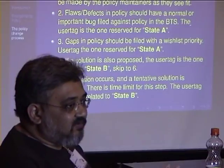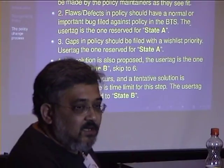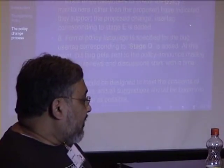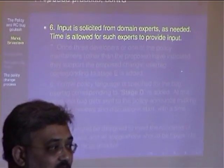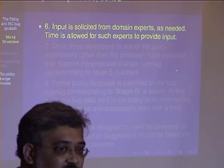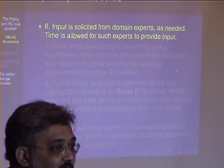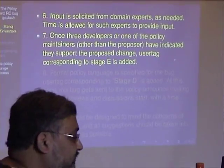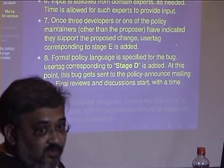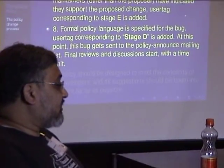Then the discussion occurs — tentative solutions and alternate solutions are proposed. I want a strict time limit for this stage. If we can't find a solution in a month, we might not find one. We solicit input from domain experts, but they might not want to respond. So again there is a time limit: you ask them, you wait politely for a response for a week or so, and if nobody responds, we kind of move on — we don't let the proposal die there. I want sign-off so I know something is okay, and then we create formal policy language. Filer reviews and discussions happen at this stage, also with a time limit.